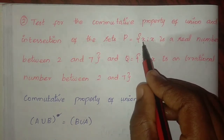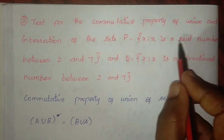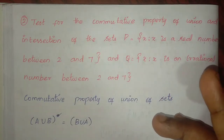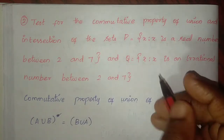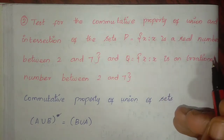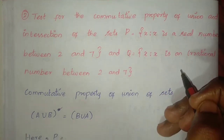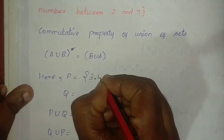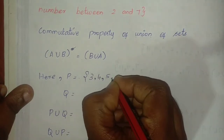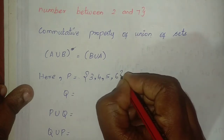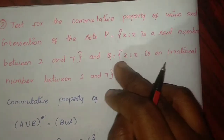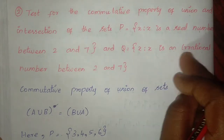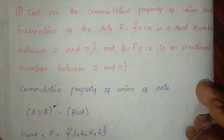For set P: x such that x is a real number between 2 and 7. The real numbers between 2 and 7 are 3, 4, 5, 6. So P equals {3, 4, 5, 6}.